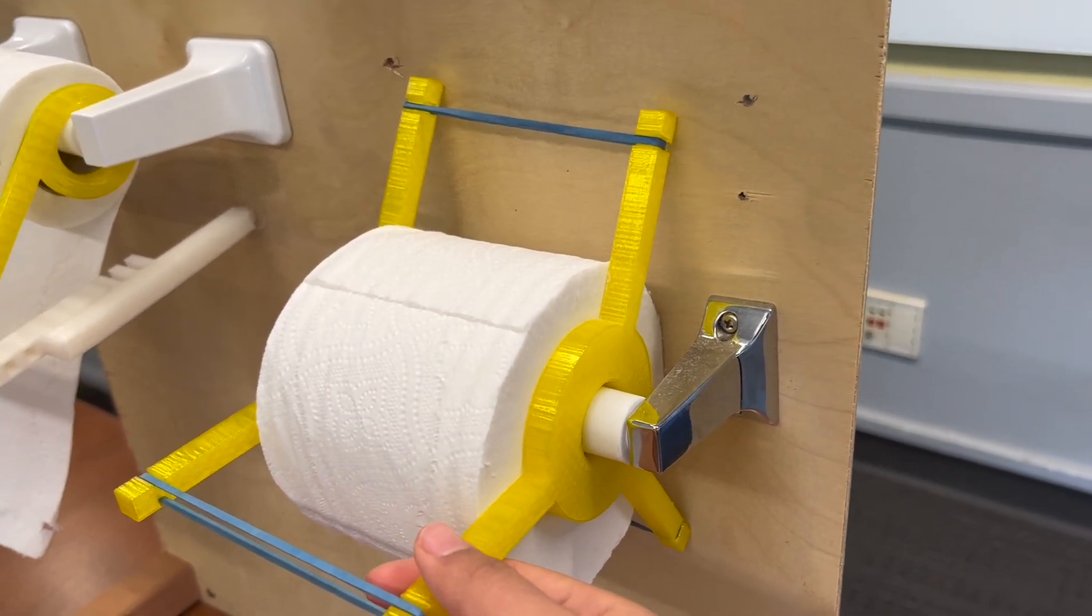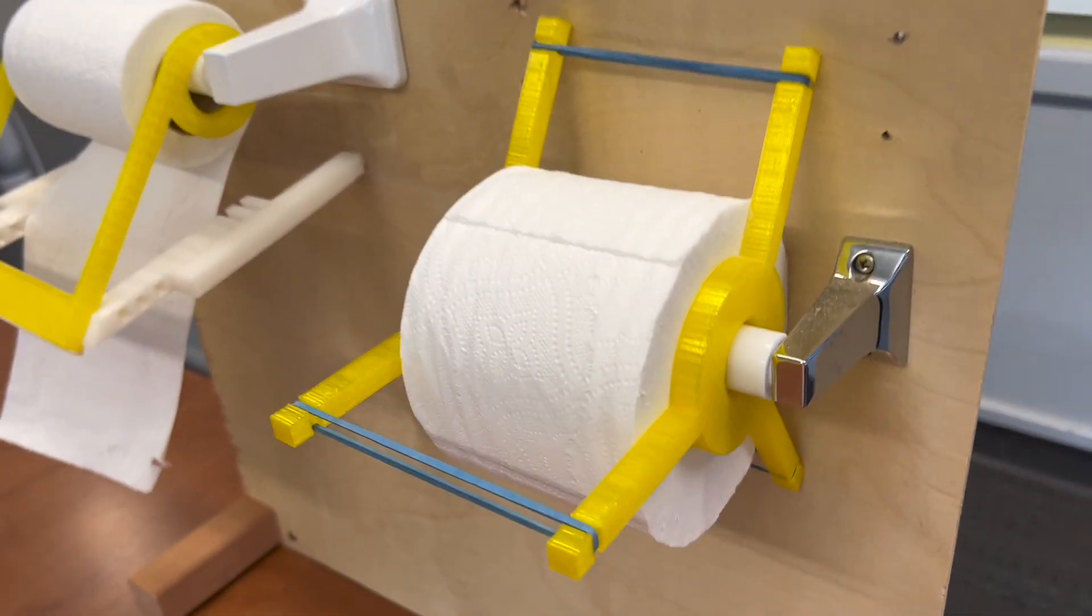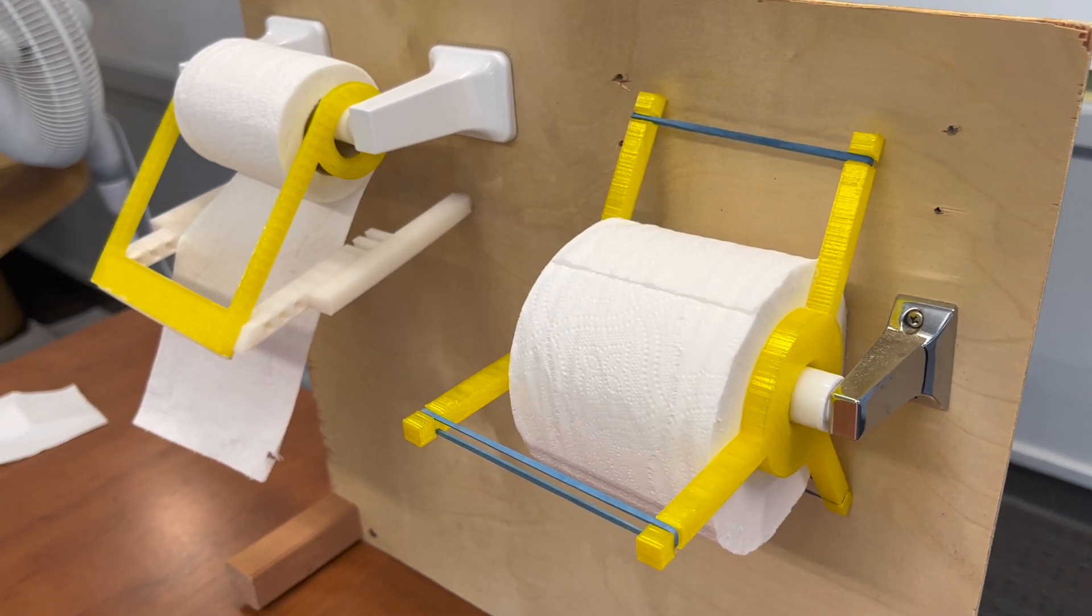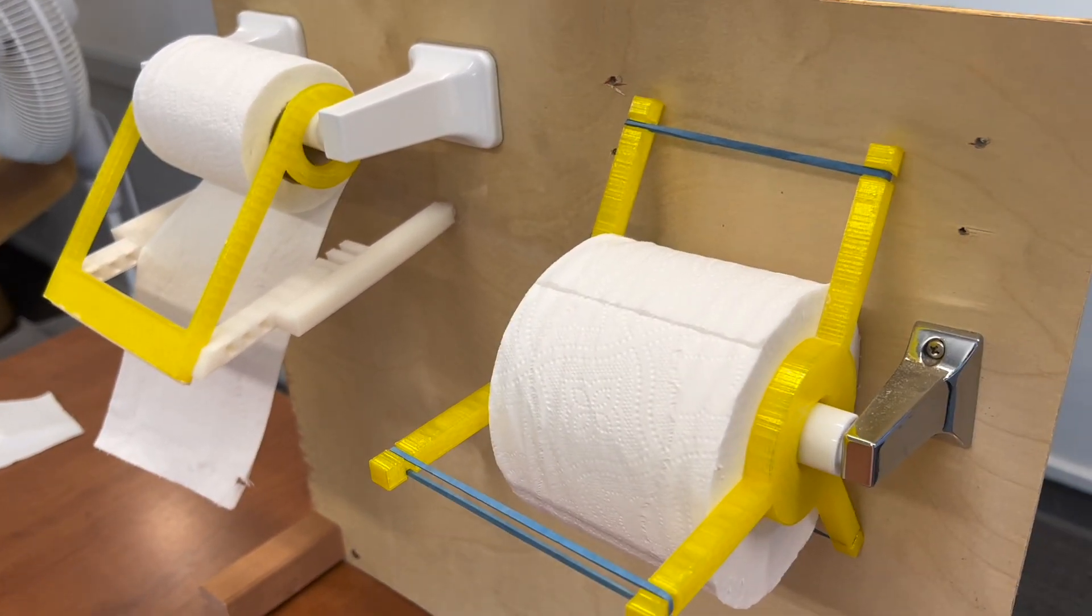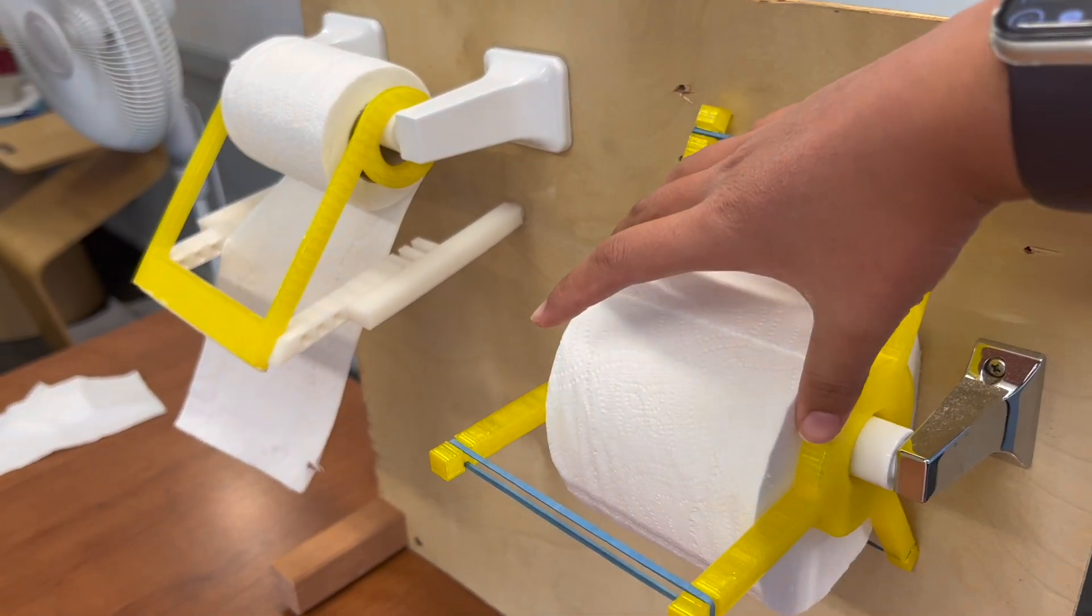You just print two of these, and then connect them using three elastic bands—a very low-cost, simple design. This makes it so it can work on basically any toilet paper roll of any width.